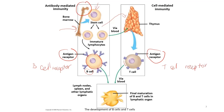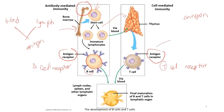The function of this receptor is to recognize and bind to particular antigens found on the surface of pathogens. For the B cell receptor, it will bind to antigens that are circulating in blood or lymph. This is different from the T cell receptor, which binds to antigen that is presented by a molecule called MHC — major histocompatibility complex — which we are going to learn about later.